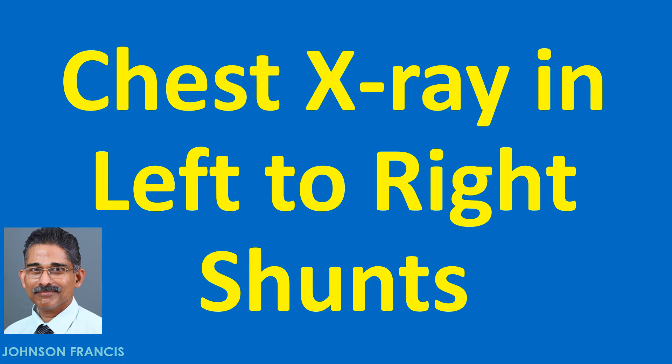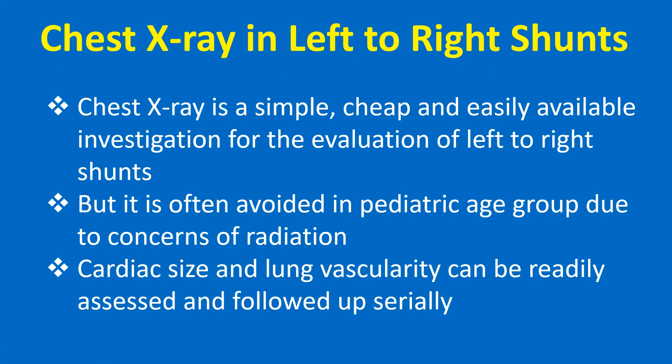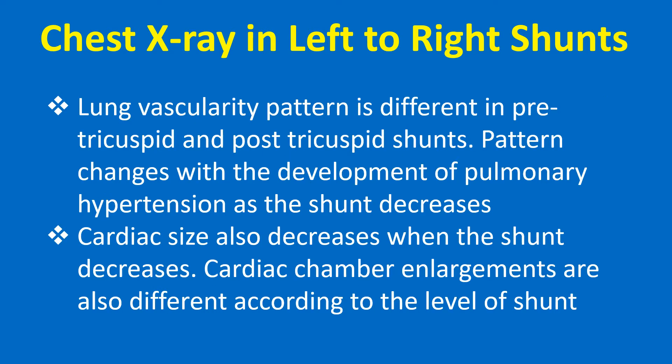Chest X-ray is a simple, cheap, and easily available investigation for the evaluation of left-to-right shunts. It is often avoided in the paediatric age group due to concerns of radiation. Cardiac size and lung vascularity can be readily assessed and followed up serially. Lung vascularity pattern is different in pre-tricuspid and post-tricuspid shunts.